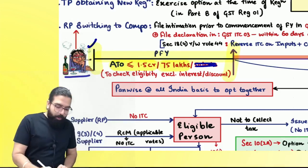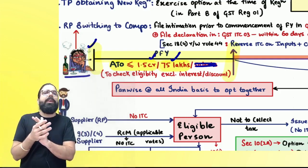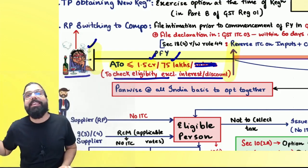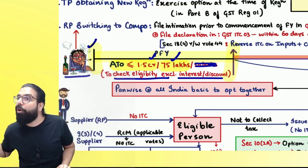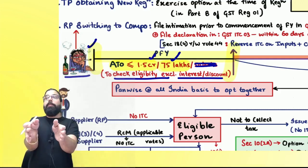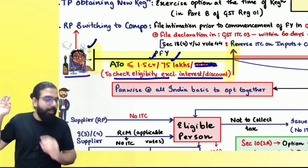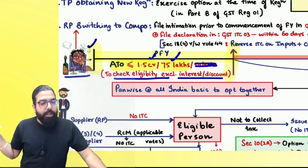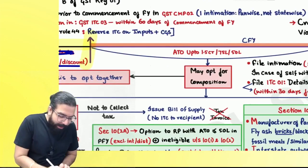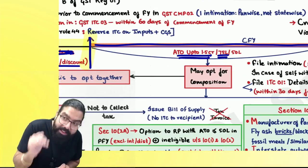The limits are 1.5 crore or 75 lakh. When you check the turnover of a person, always remember to exclude interest and discount — but only for the purpose of composition. So the people eligible for composition are those whose last year's turnover is up to 1.5 crore or 75 lakh. That means in the current financial year you will be eligible for the scheme up to 1.5 crore or 75 lakh.